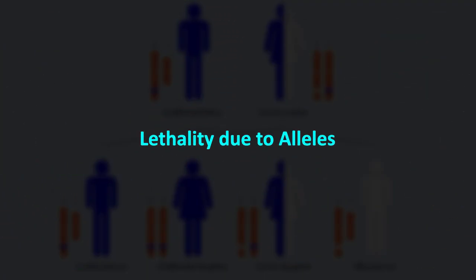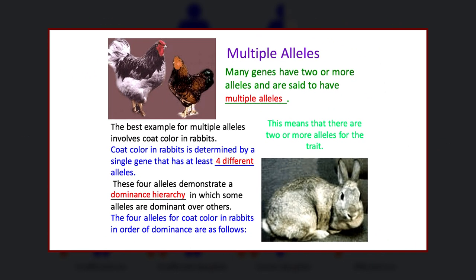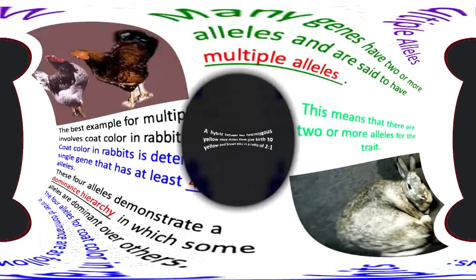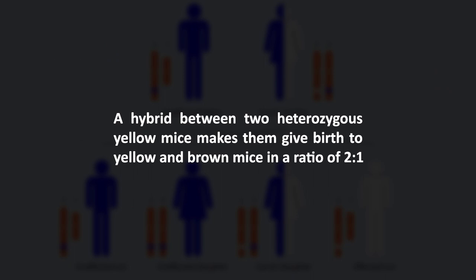Let's discuss another example: lethality due to alleles. At times, the combination of multiple alleles can make the survival of an individual difficult to impossible. For example, a hybrid between two heterozygote yellow mice produces yellow and brown mice in a ratio of 2 to 1. Mice that have homozygous alleles die during the gestation period, especially during embryonic development. These lethal alleles can be found in dominant or recessive forms and can express the individual's traits in homozygous or heterozygous cases.